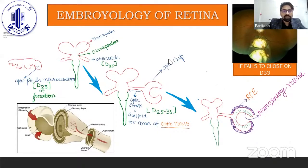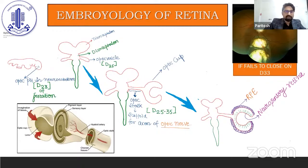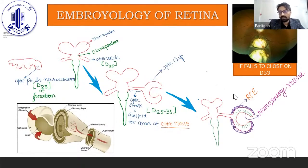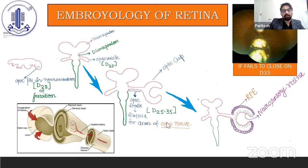To begin with the retina, we would like to see some embryological facts. We have an optic pit in neuroectoderm at day 23rd of gestation. The brain has three basic parts: prosencephalon, mesencephalon, and rhombencephalon. Prosencephalon further divides into telencephalon and diencephalon. From diencephalon, we get an optic vesicle at day 25th of gestation, which around day 25th to 35th transforms into an optic cup. The optic cup has an outermost layer which converts into the future retinal pigment epithelium and the innermost layer subsequently forms the neurosensory retinal layer. The optic stalk at around day 25th to 35th forms a scaffold for the axons of the optic nerve.